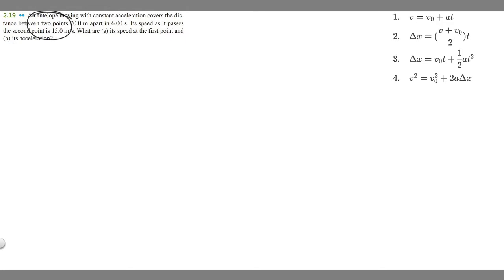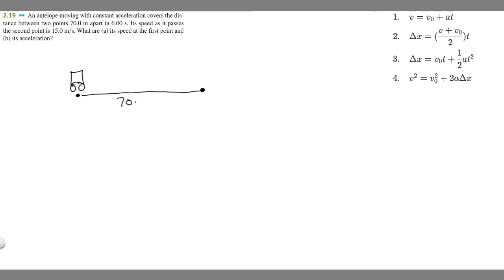I'm going to draw a car because I can't really draw an antelope, but imagine we have this car — or antelope — moving with a constant acceleration and covering the distance between two points. This is going to be the first point, and it covers the distance between two different points, which we know are 70 meters apart, in six seconds.